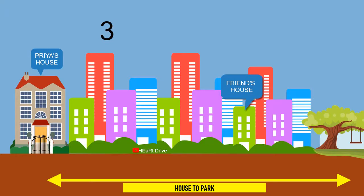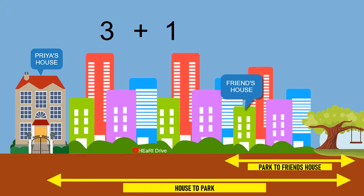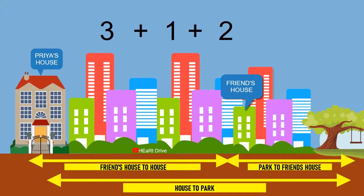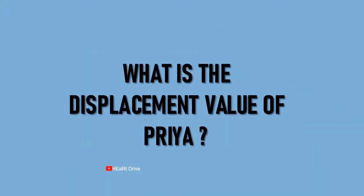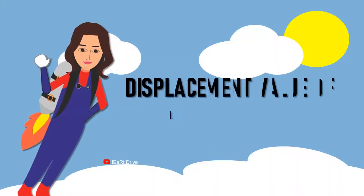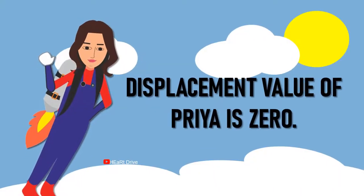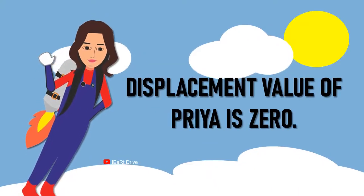From her friend's house, she cycles two kilometers west to return home. Now, what is the distance covered by Priya? It is three kilometers plus one kilometer plus two kilometers, which equals six kilometers. So the distance covered by Priya is six kilometers. Now, what is the displacement of Priya? Zero kilometers.